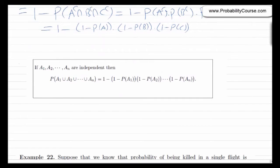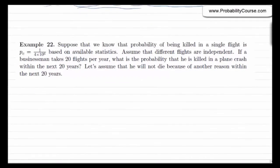This is a general formula: if A1, A2, up to AN are independent, the probability of their union is given by 1 minus the product of (1 minus probability of Ai). Let's look at an example. We want to calculate the probability of being killed in a plane crash over a 20-year period. Suppose the probability of being killed in a single flight is P_C equals 1 over 4 times 10 to the power of 6, based on available statistics. Assume that different flights are independent.